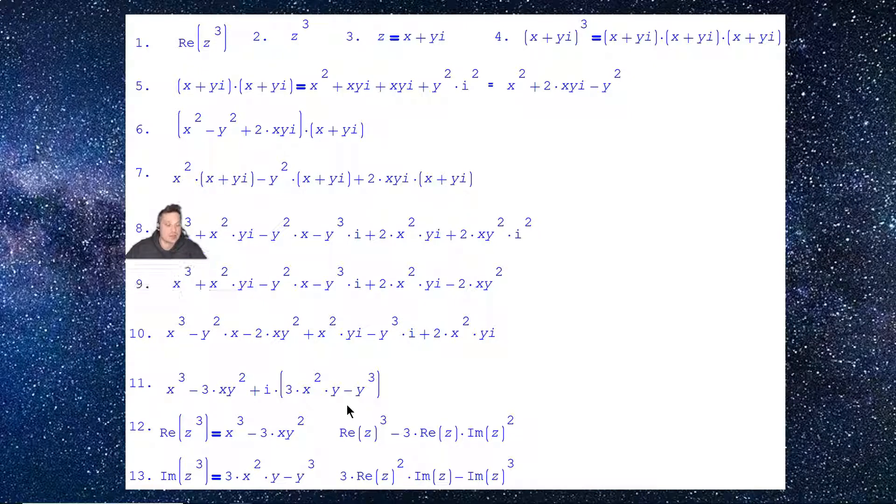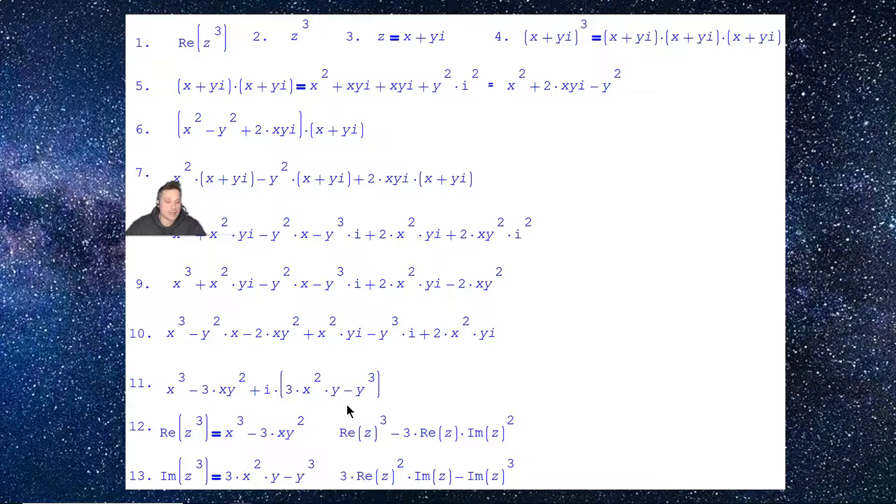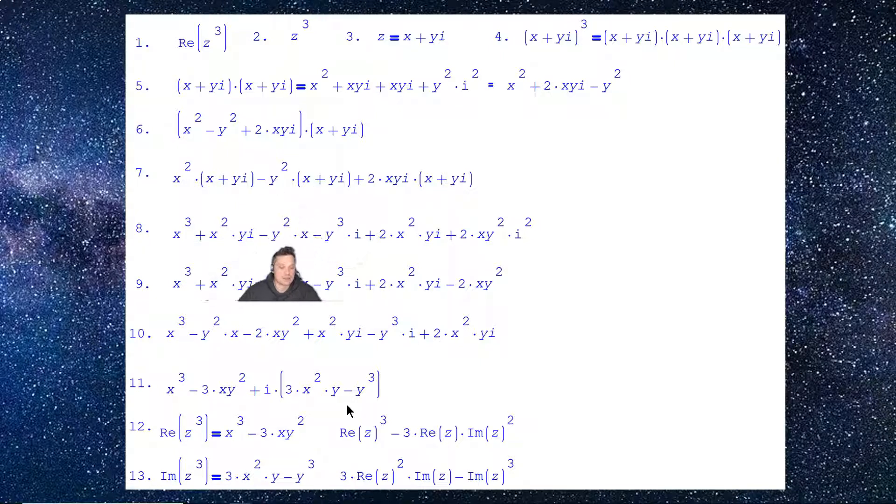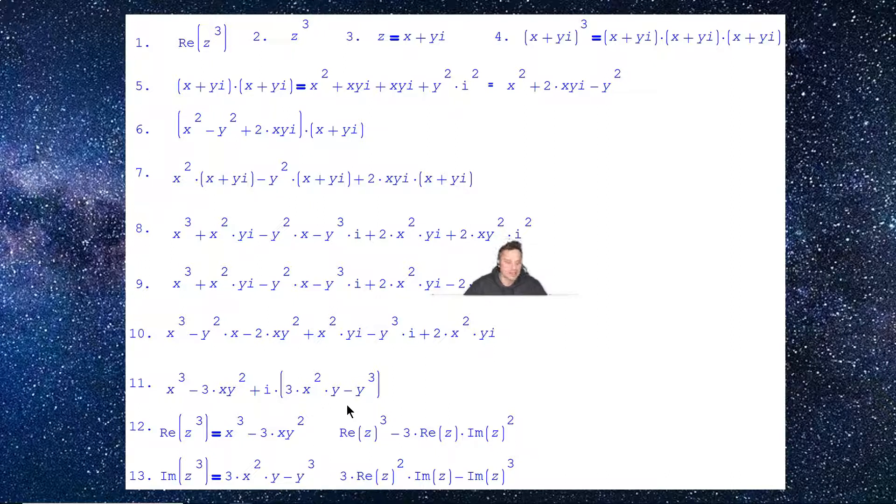Just follow the top of my head, please. I have x squared times yi, that's going to give me x squared yi. Then I'm going to have negative y squared times x, that's going to give me negative y squared x. Then negative y squared times yi, that will give me negative y cubed i. Then I'll have 2xy times x, that's going to give me 2x squared y. I want to make sure I'm not misspeaking. And then 2xy times yi, which will give me 2xy squared i squared. Not for the faint of heart.